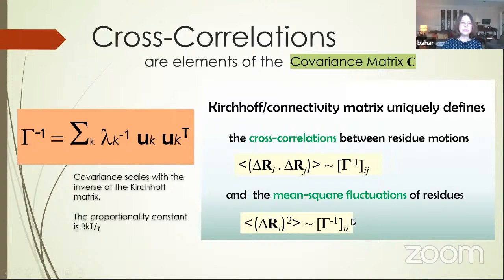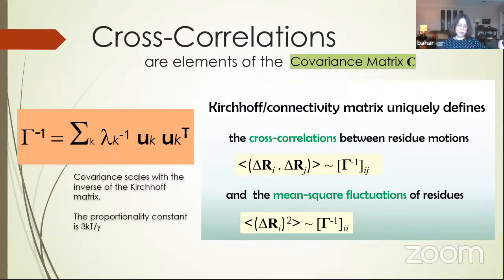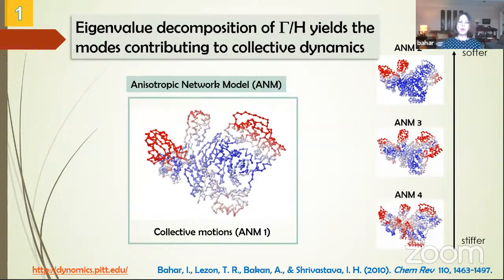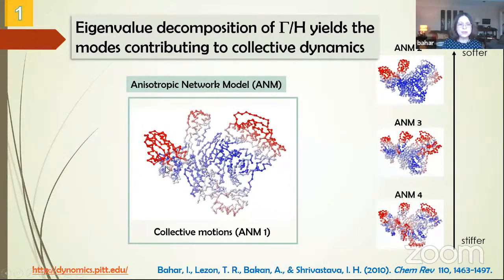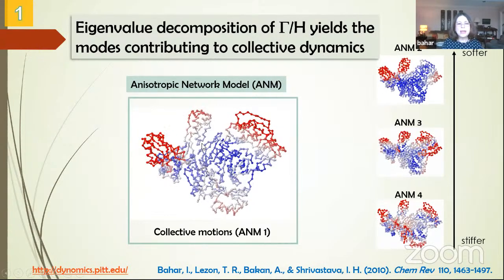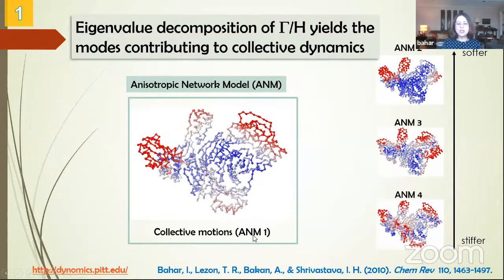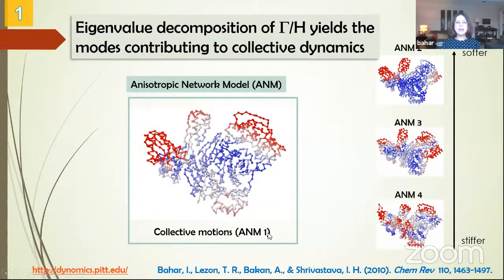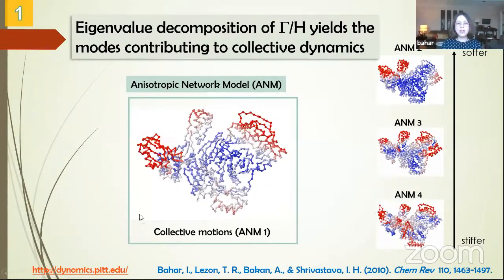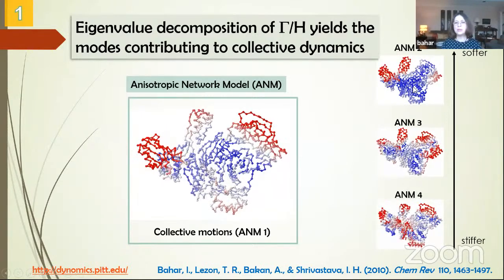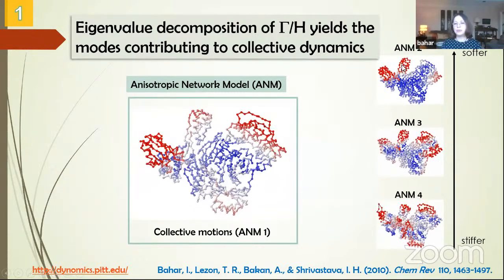Furthermore, we can decompose the connectivity or Hessian matrix into contributions of several eigenmodes — eigenvalues and eigenvectors — allowing us to extract the contribution of the most cooperative motion, which survives at the longest times. As examples for HIV reverse transcriptase, you can see the finger domain moving with respect to the thumb and RNase H. This is the slowest mode, ANM1, the most cooperative and also functional movement where the RNA is being held. Higher modes are stiffer or more localized.